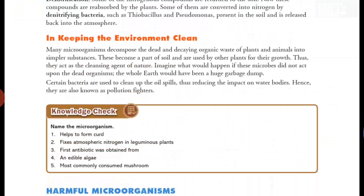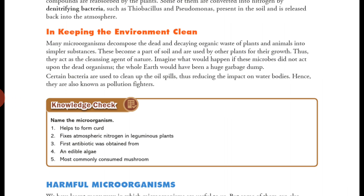Now let's move to the next topic: how microorganisms help in keeping the environment clean. Many microorganisms decompose the dead and decaying organic waste of plants and animals into simpler substances. We saw above how dead plants and animals were converted into ammonia, which was then converted into nitrates and reused by plants — all through microorganisms like nitrifying bacteria. This decomposed matter becomes part of the soil and is used by plants for their growth.